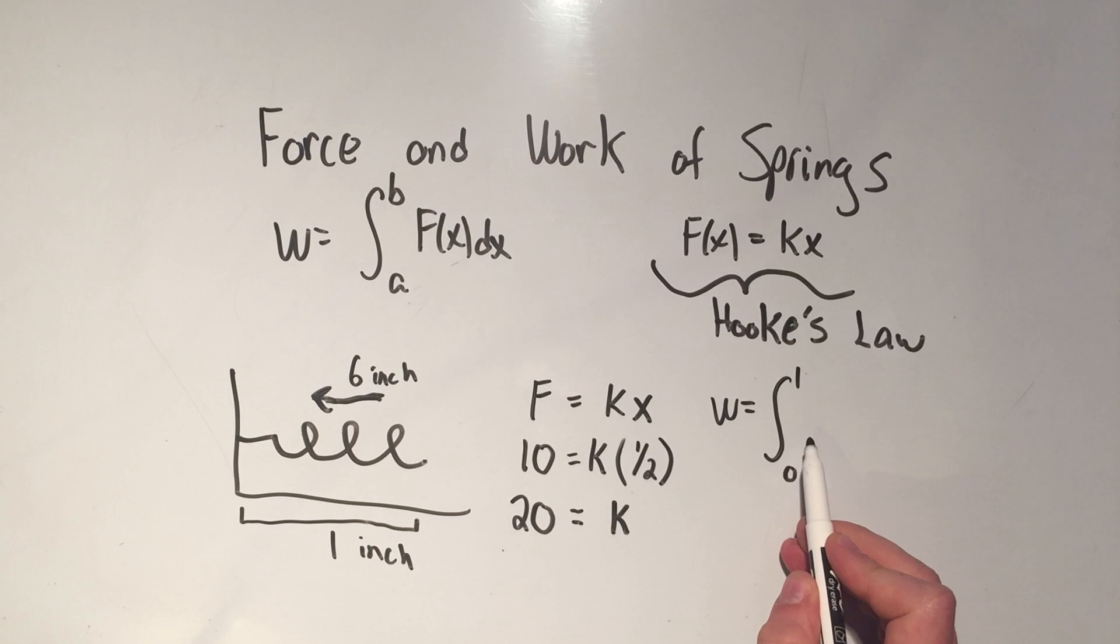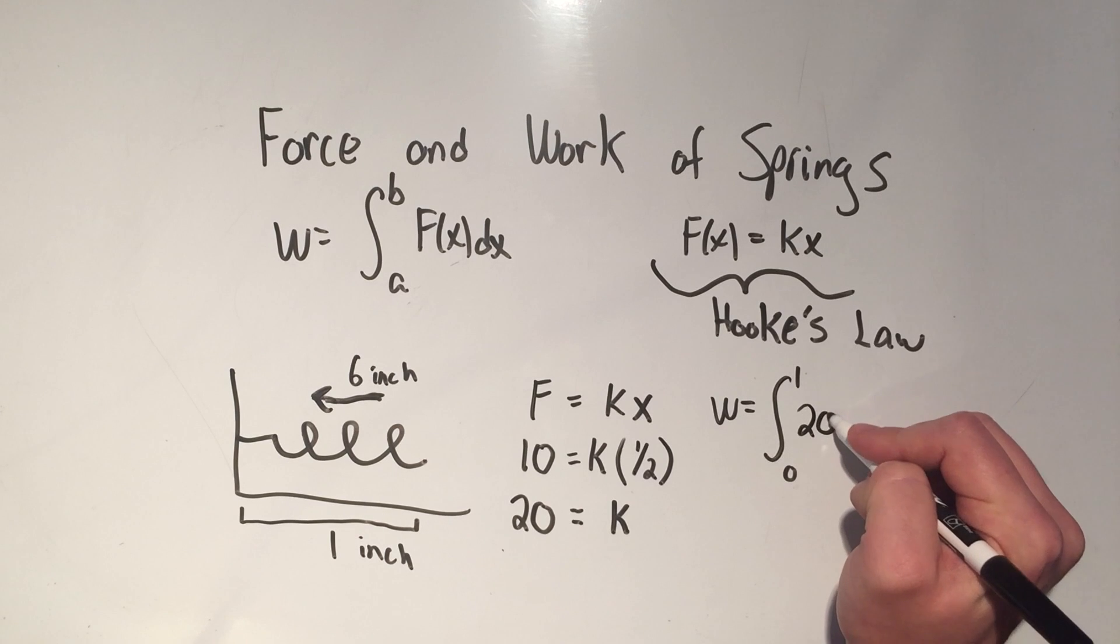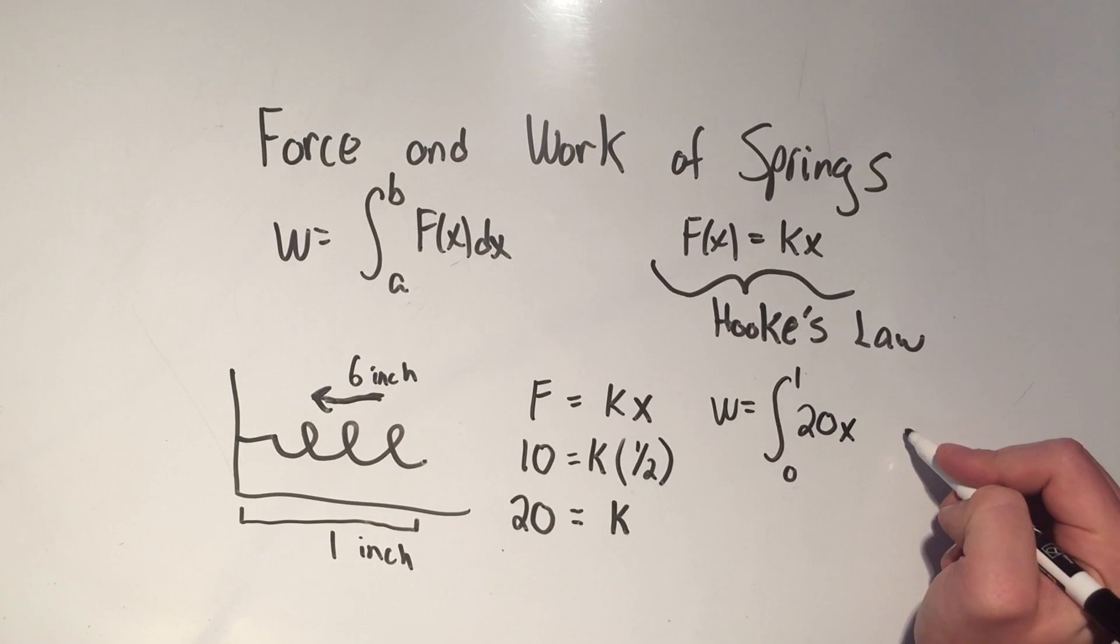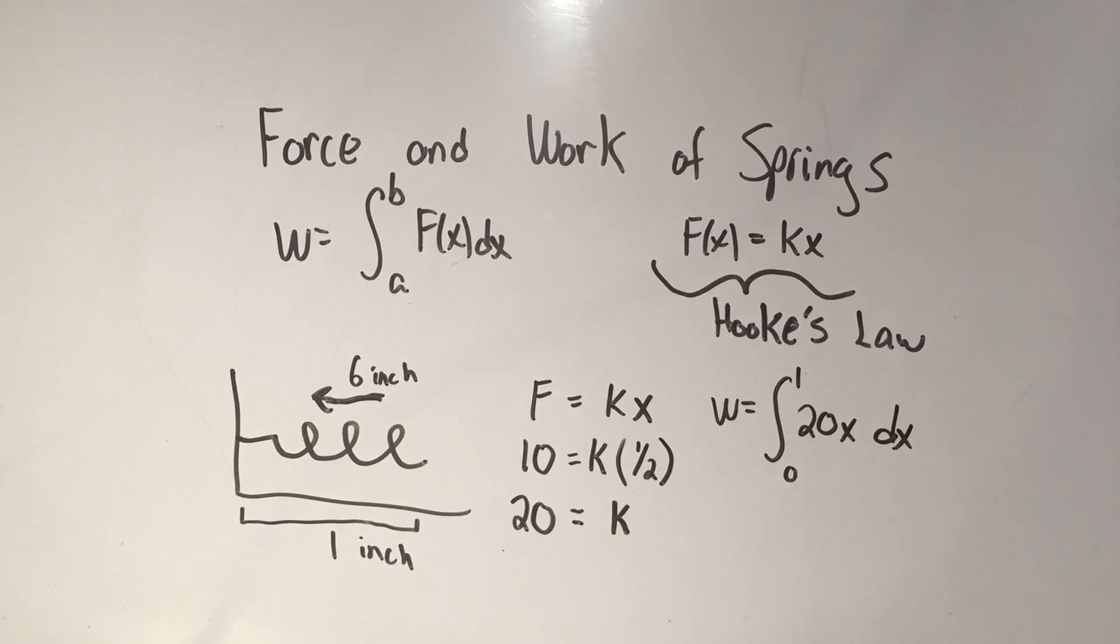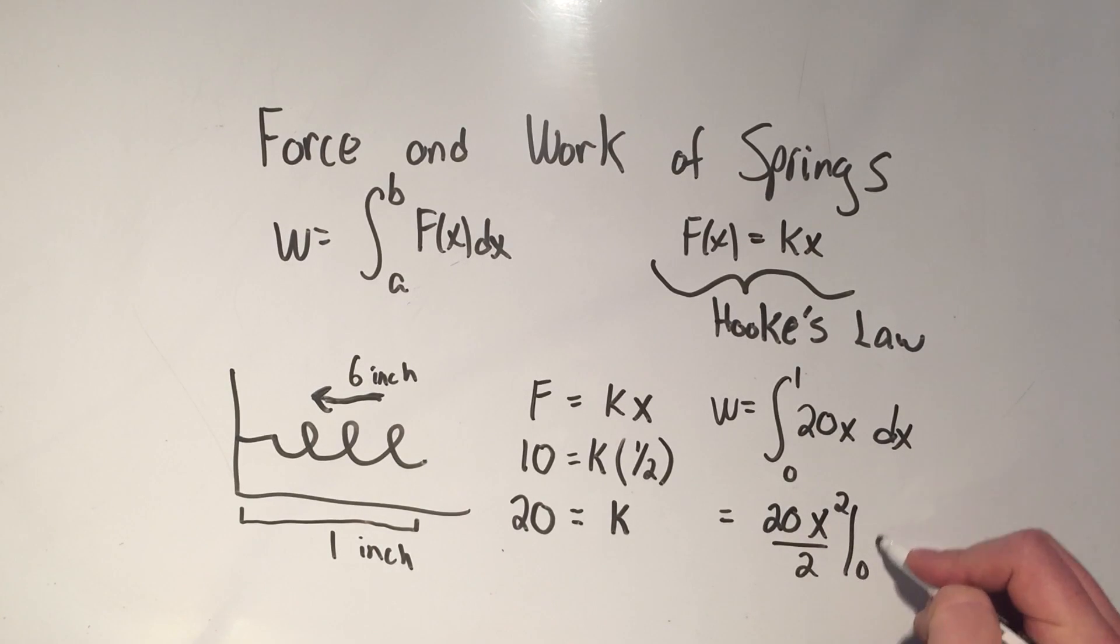And then I need to integrate the force function, which is k times x. I've just found k, k was 20. And then I put an x here. And then I just need dx. And now this is a very easy definite integral to solve. So we can just solve that by adding one to the power, dividing by the new power, and evaluating from zero to one, 20 over two is 10.